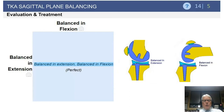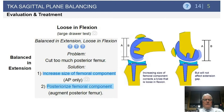What happens if you're balanced in both flexion and extension? That's nirvana — you did a great job. Nothing needs to be done. That's what you want, so you don't have to do anything in that flexion-extension gap relationship.